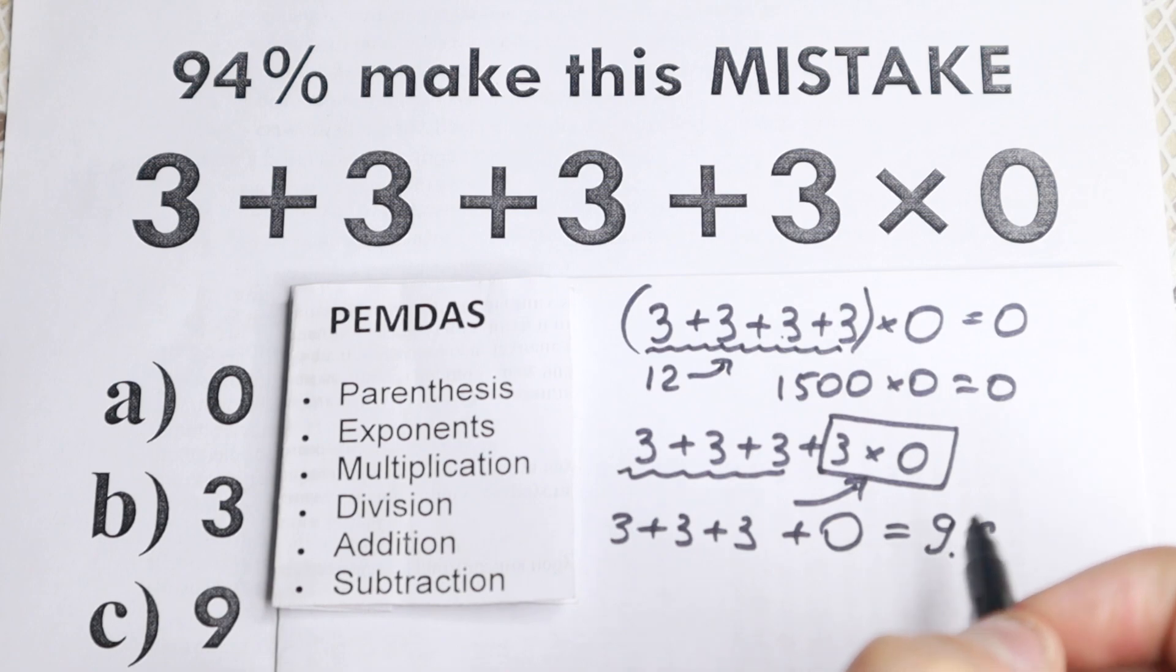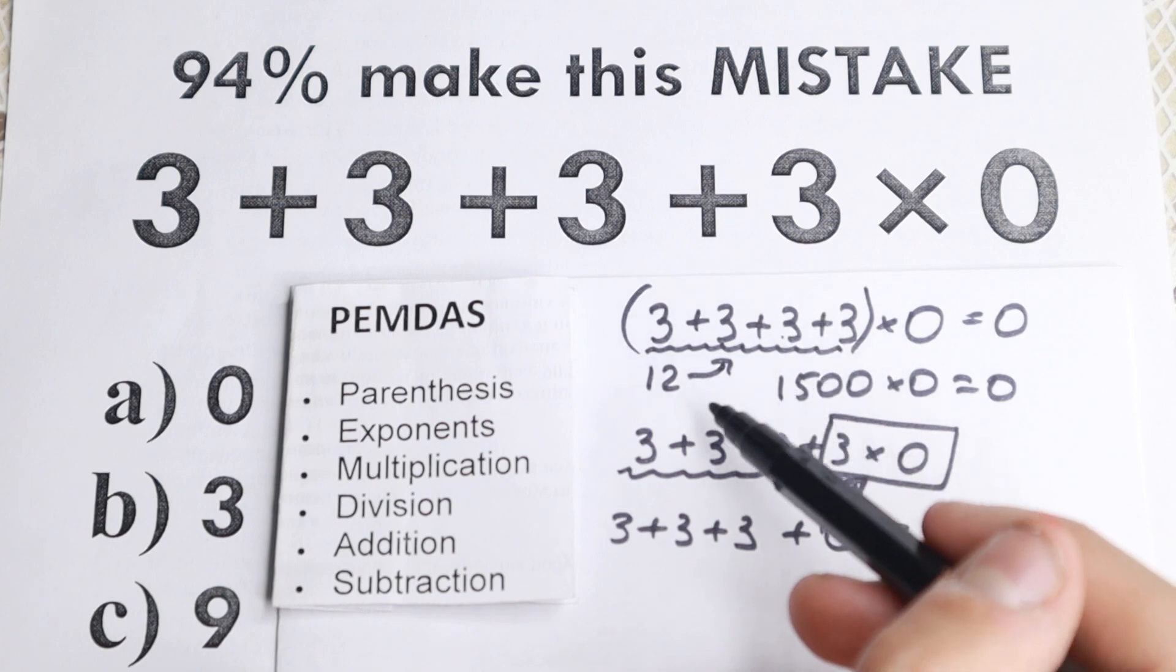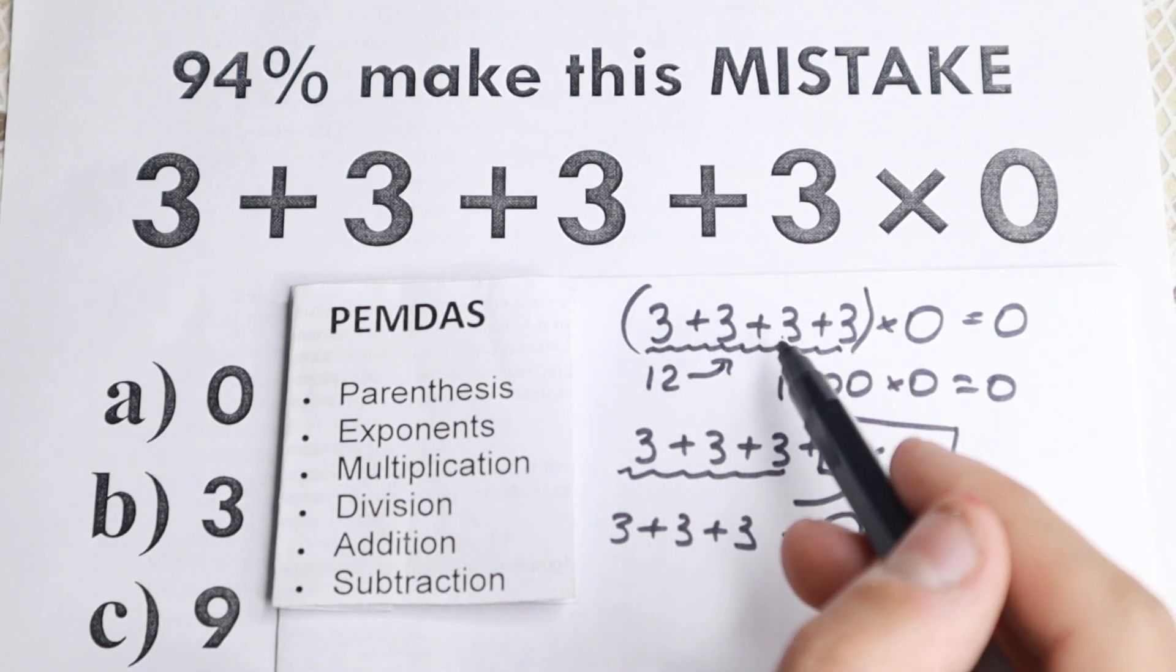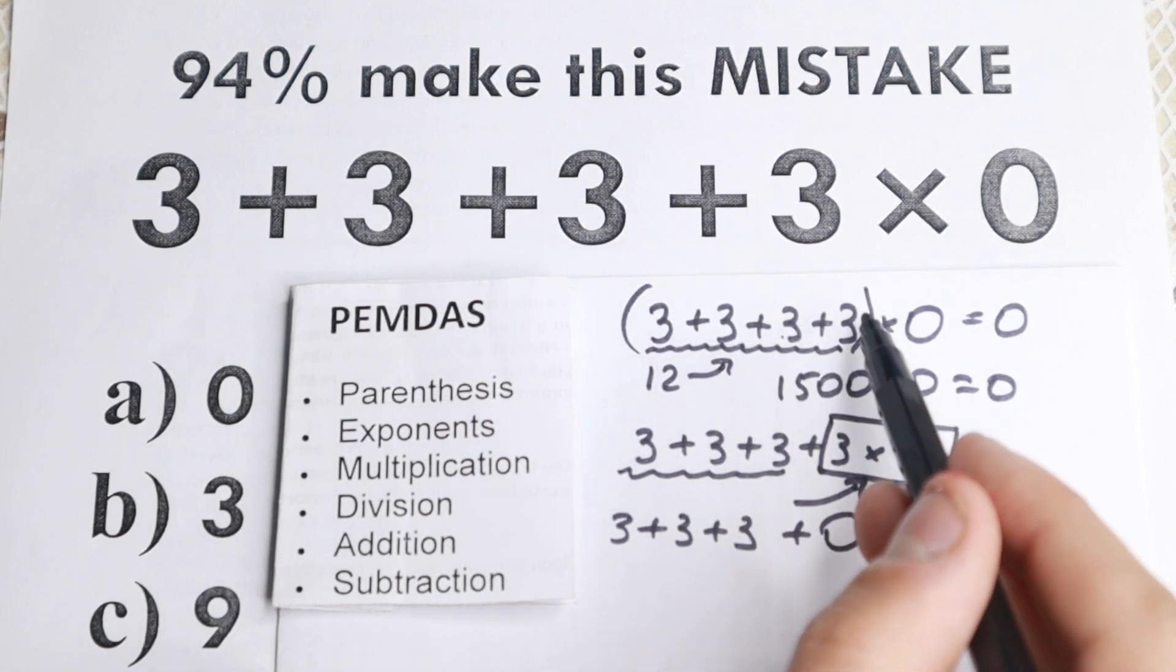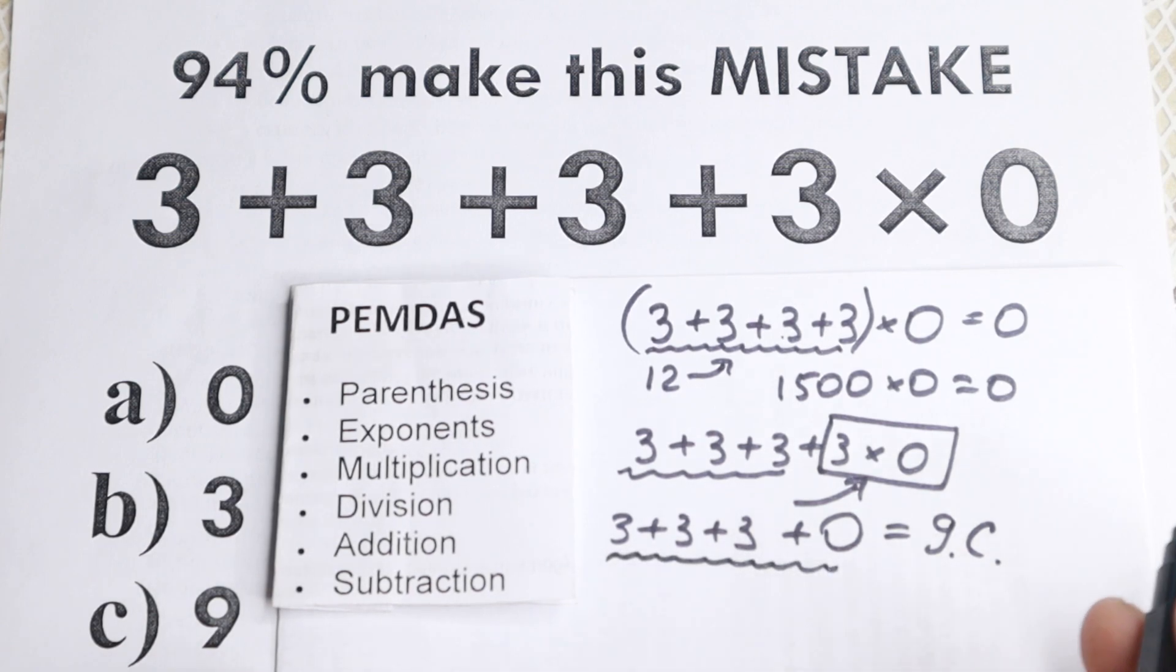So if you want to get a correct answer 0, you need to put, or if you see like this question in your math book, you can easily start with parentheses. But right here we don't have parentheses, we need to start with multiplication and then simply addition, like everyone knows how to do this.